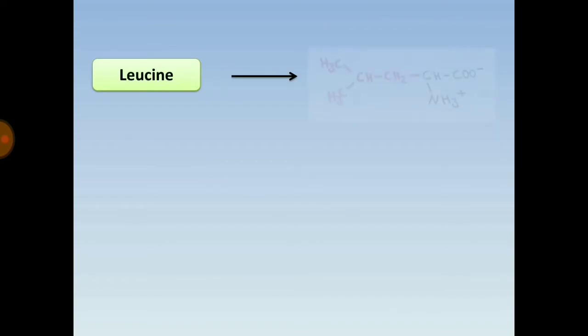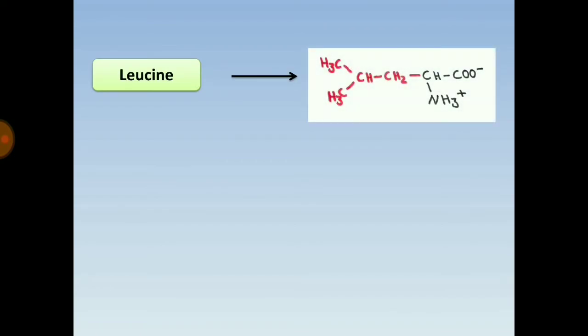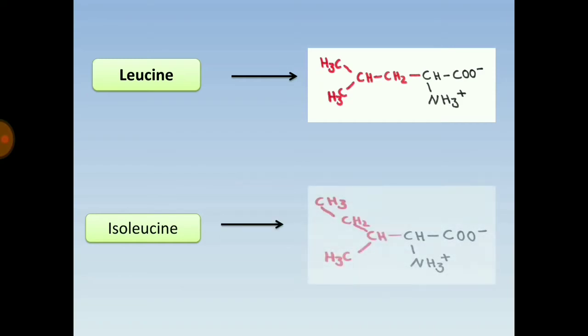Leucine has the general structure plus a –CH2–CH2– side chain (shown in red). Isoleucine also has its distinct branched aliphatic side chain structure.